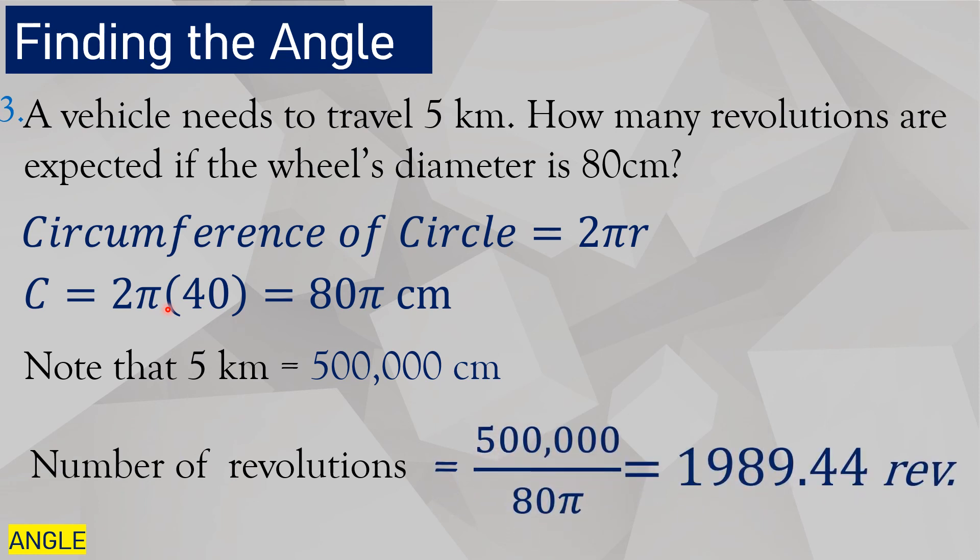Now we continue. So the number of revolutions is 500,000 divided by 80 pi. Why divide by 80 pi? Because that's the circumference of the circle. That tells us the length of one complete revolution. This is already the arc length of one complete revolution, recognizing that the diameter is 80 or the radius is 40 centimeters. So the vehicle needs 1,989.44 revolutions to reach 5 kilometer distance.